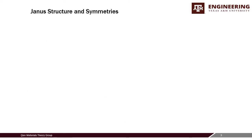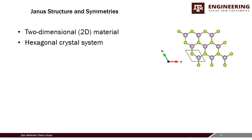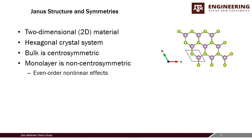The Janus material is a two-dimensional material in the hexagonal crystal system. It has a three-fold rotational axis — a 120-degree rotation — and three vertical mirror planes. Notably, the bulk three-dimensional version is centrosymmetric, meaning it has a point of inversion symmetry, but the monolayer is not centrosymmetric. The important result is that this means we can observe even-ordered nonlinear effects, which would disappear in the bulk centrosymmetric version.